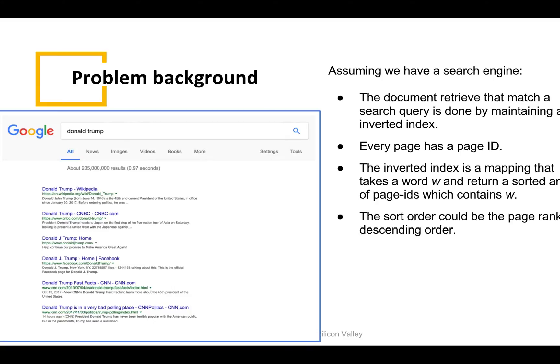we will have a list of pages come out, like here we can see Wikipedia page, some news related to him, his Facebook page, etc. The ranking of these pages will depend on the inverted index of the search query.